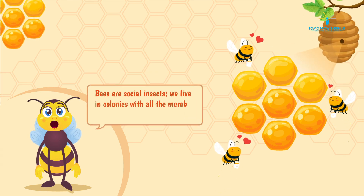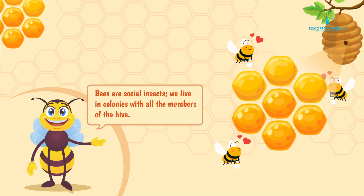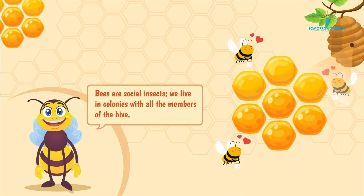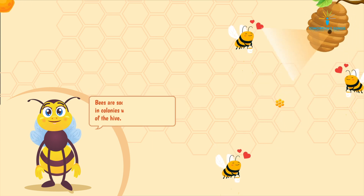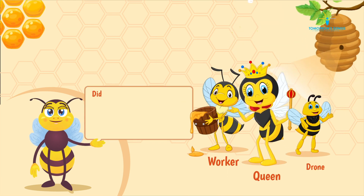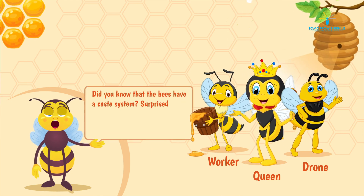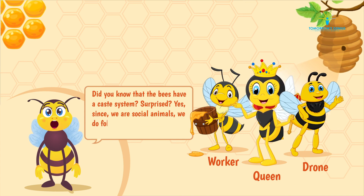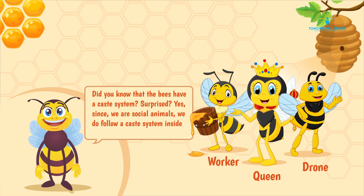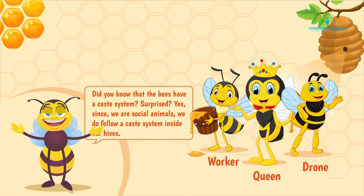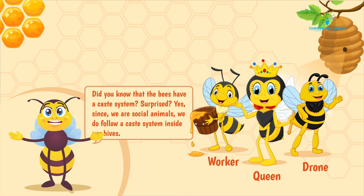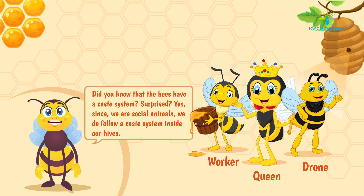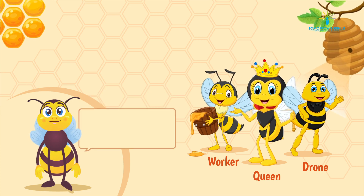Bees are social insects. We live in colonies with all the members of the hive. Did you know that bees have a caste system? Surprised? Yes — since we are social animals, we do follow a caste system inside our hives.